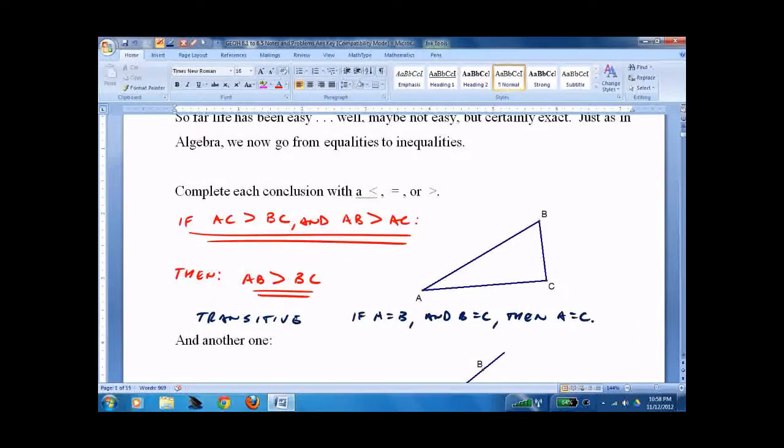Now, in inequalities, we actually have to call it transitive. One piece is greater than the second piece, second piece is greater than the third piece, and the first piece is greater than the third piece by transitive. That's one.